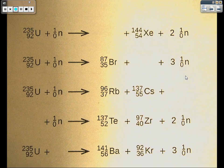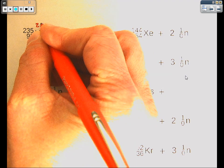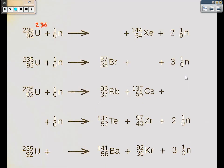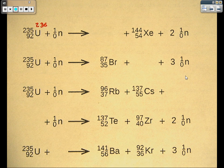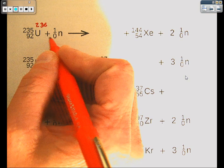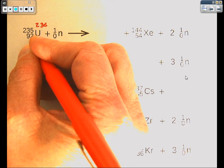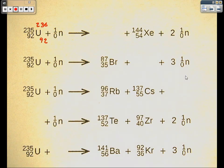What we're going to do is add our masses together. We get a total mass of 236 over here, 235 plus 1. Then we're going to add our atomic numbers together. It's a total of 92. 92 plus 0 gives us a total of 92.